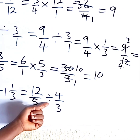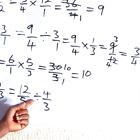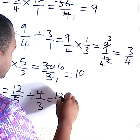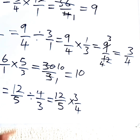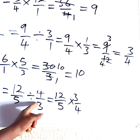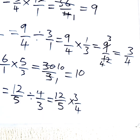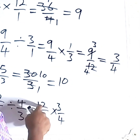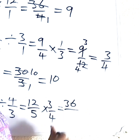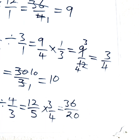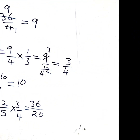We change the division sign to multiplication and invert the fraction. So, 3 times 12 is 36, and 5 times 4 is 20. We can check: 36 is bigger than 20, so we use 20 to divide 36. It gives you 1, with a remainder of 16.